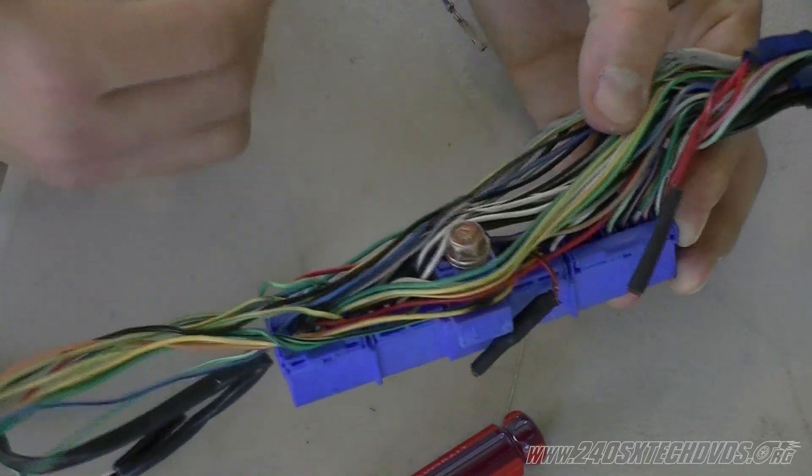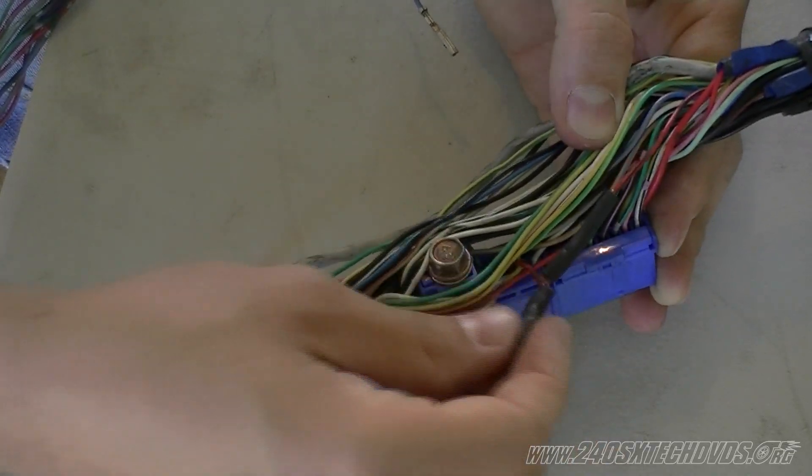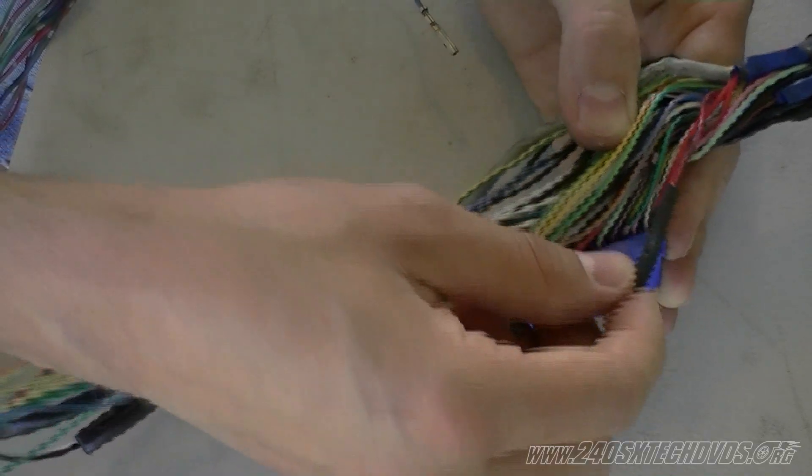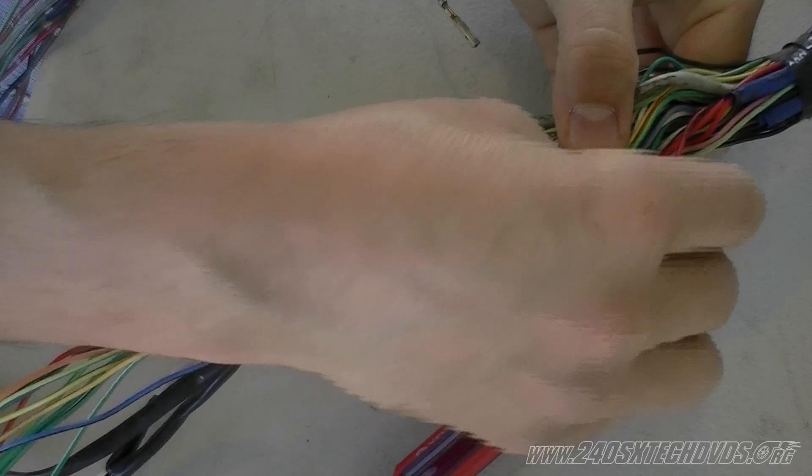Also, as you'll note, this red with black striped wire right here has been cut and soldered a few times for whatever reason. I have to fix that. This is for your ECCS relay, so I'm definitely going to have to fix that.